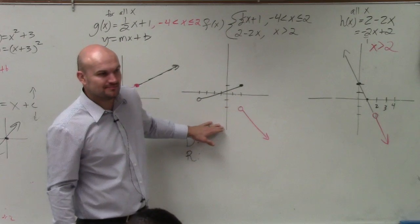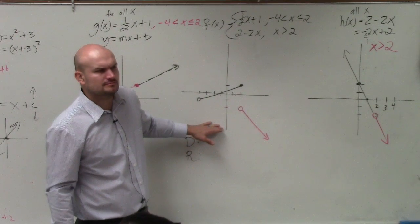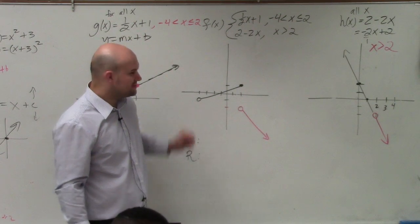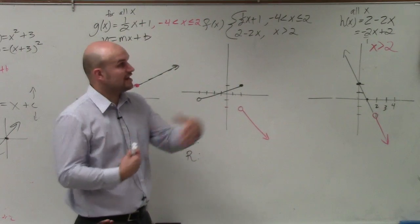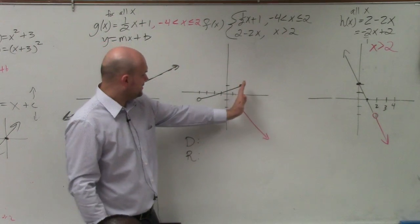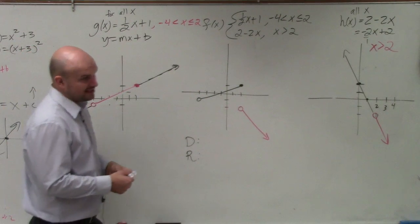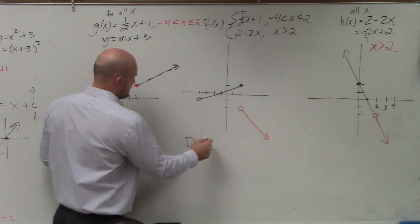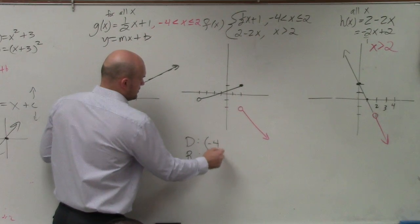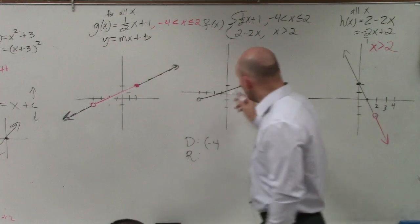OK. Now, we're not done yet. I asked you guys to identify the domain. Domain is how far left and how far right the graph is going. How far left is this graph going? Negative 4. And is that point included or not? No. Negative 4. And then we could say, well, how far? Let's see.